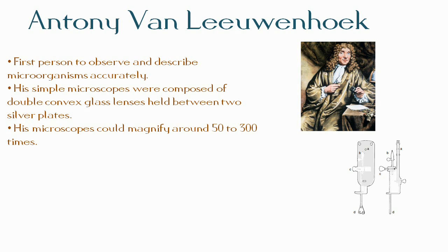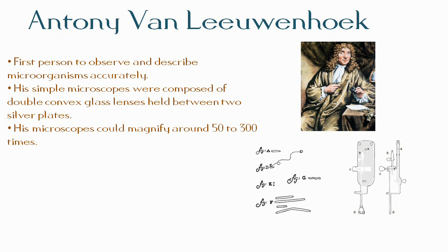This figure shows the drawing of one of the microscopes, showing the lens denoted by A, B representing the mounting pin, and D representing the focusing screws. These are Leeuwenhoek's drawings of bacteria from the human mouth. Beginning in 1673, Leeuwenhoek sent detailed letters describing his discoveries to the Royal Society of London. It is clear from his descriptions that he saw both bacteria and protozoa.